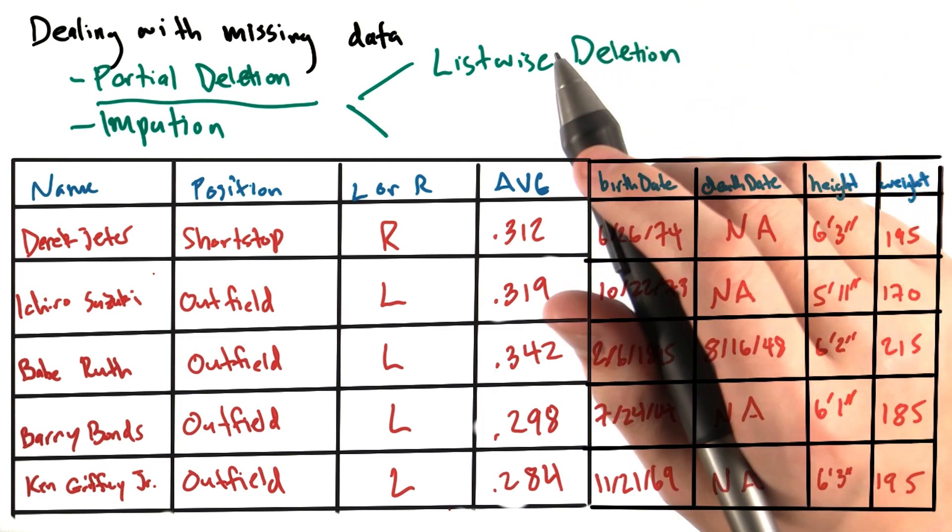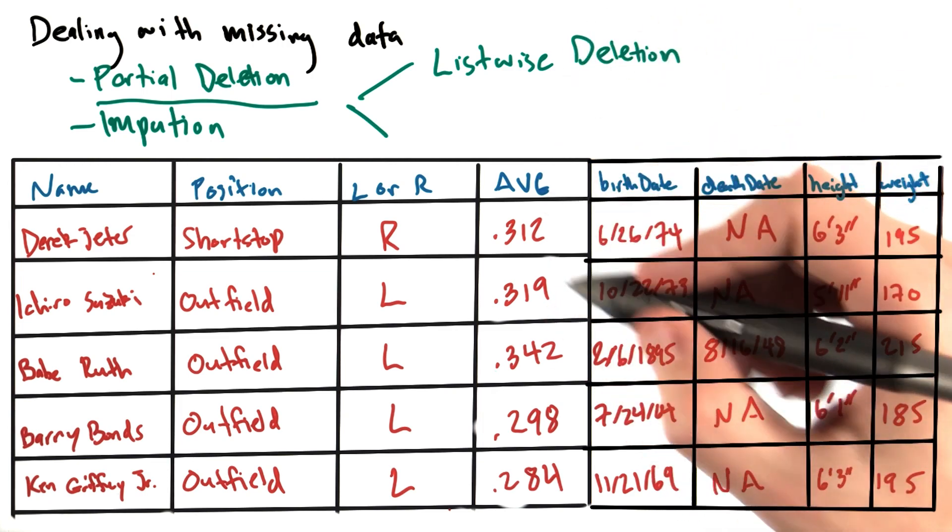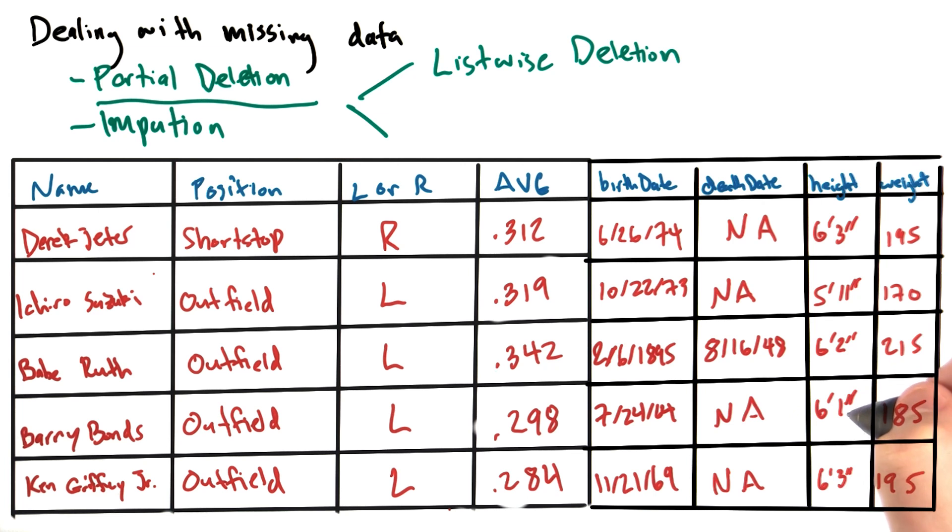So if using listwise deletion, Barry Bonds, who has a listed height but not death date, would not be included in either analysis, even if we were calculating the average height of players.